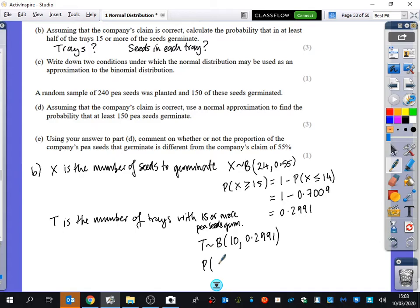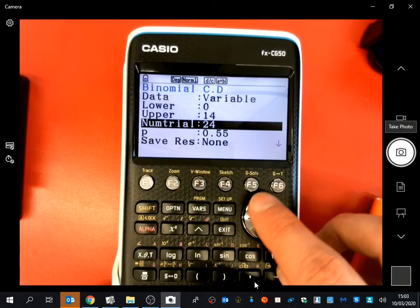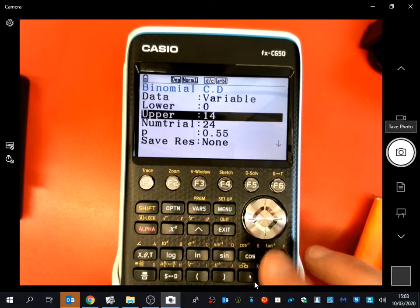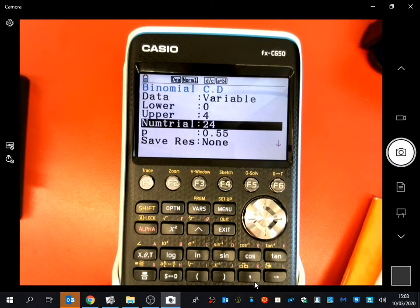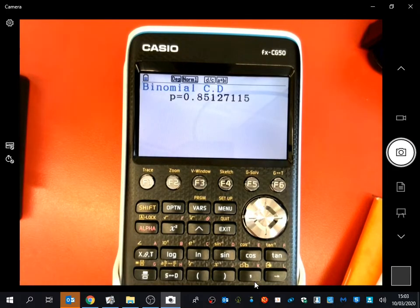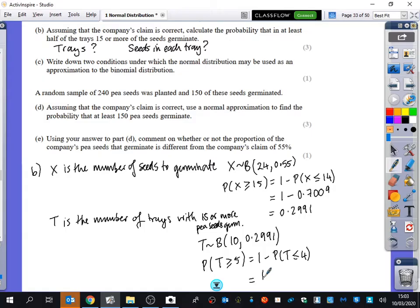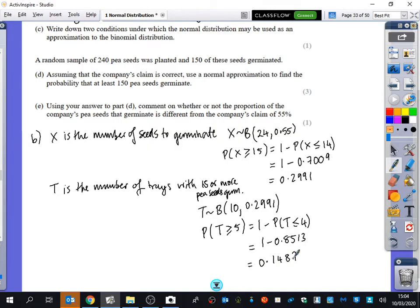So we're going to now try and find out what is the probability that the number of trays is at least half. So does that mean it's allowed to be 5 or it has to be greater than 5? So it's the probability that T is greater than or equal to 5, which is 1 minus the probability that T is less than or equal to 4. So let's go back to the calculator. OK, I know you want to go, but we're going to just have to do it at my speed. So we said less than or equal to 4. There was 10 of them and it was 0.2991. So 8513, thank you. I'm going to take my sweet time here. So it's 0.1487. So that is the probability that in at least half of them that will happen. OK, so that was part B of the question.